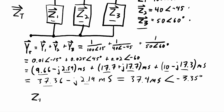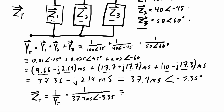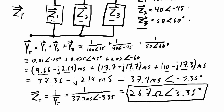And now the final step: calculate the total impedance, which equals the inverse of the total admittance. That is 1 over 37.4 mS at −3.35°. The magnitude is 1/37.4 mS = 26.7 ohms, and inverting the phase angle gives 3.35 degrees. So the total impedance of these three parallel components is 26.7 ohms at 3.35 degrees. I hope that helps with your understanding of parallel circuits when dealing with AC signals. Thanks for watching, and I'll see you in the next video.